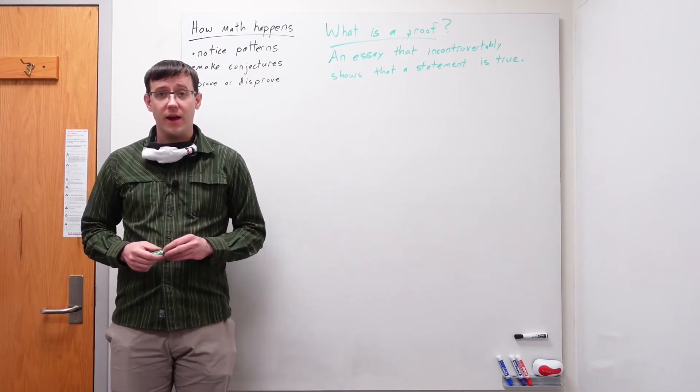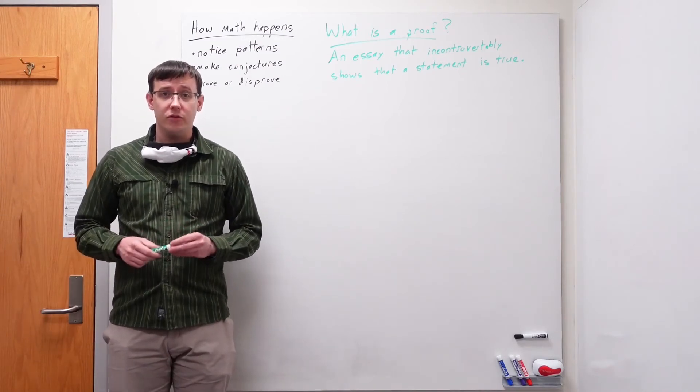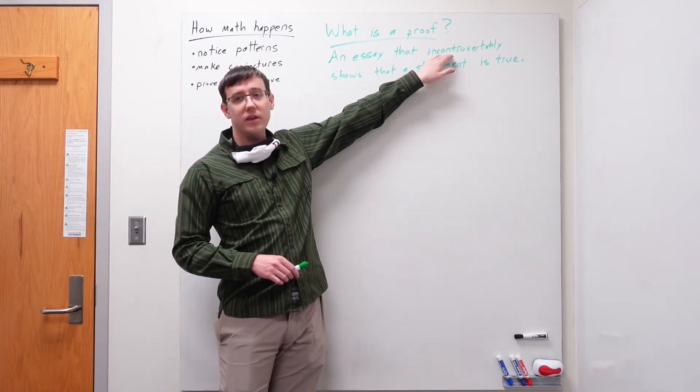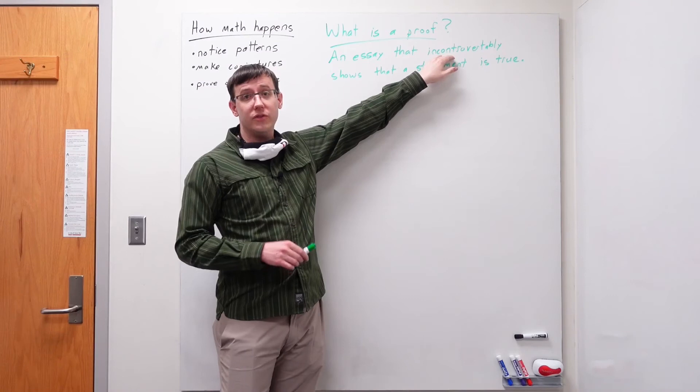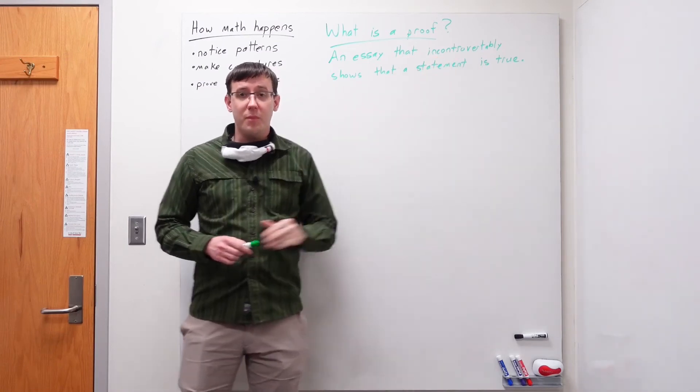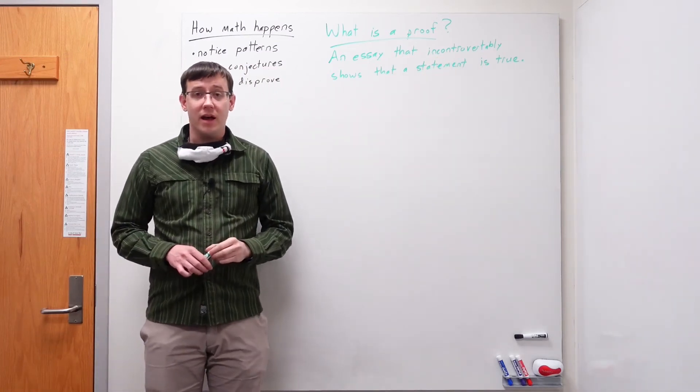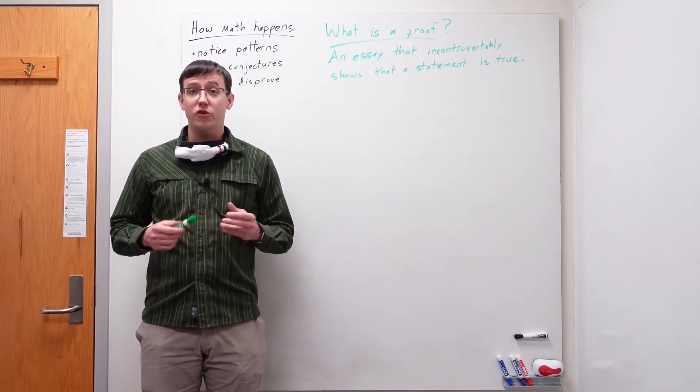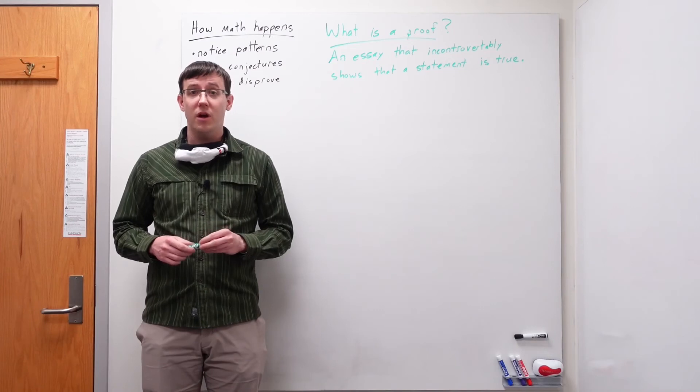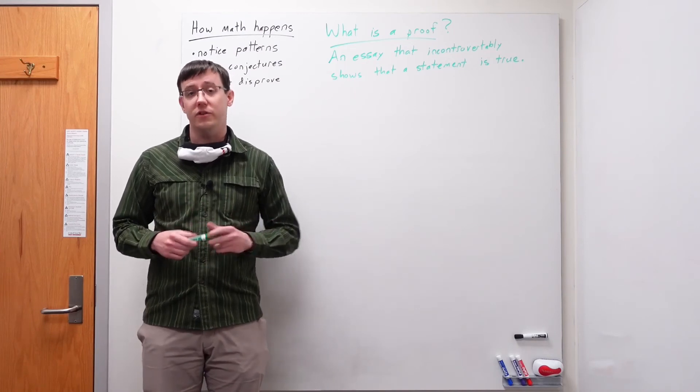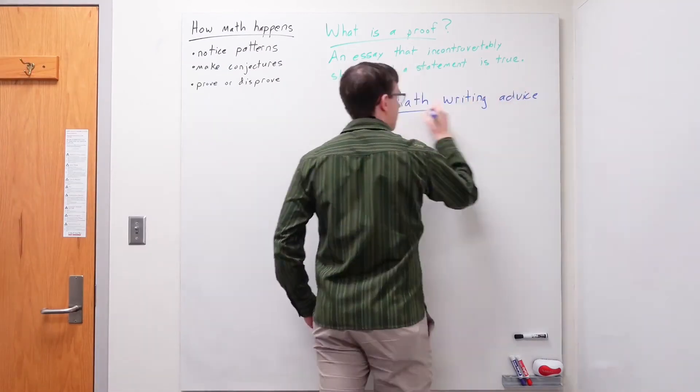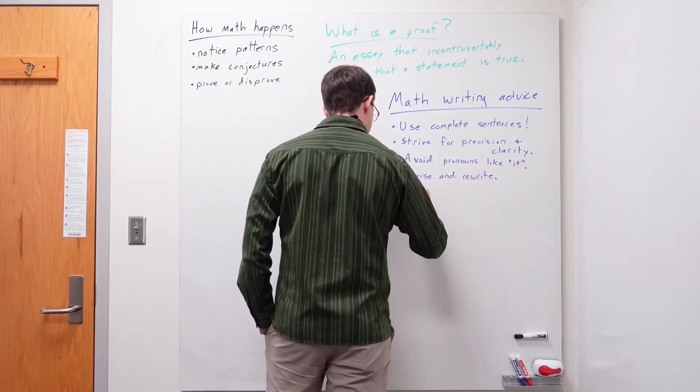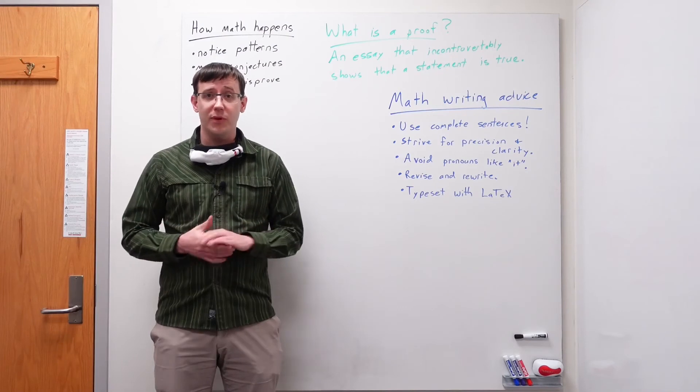But unlike many other essays, proofs have some very strong constraints on their structure. And that's expressed here by the idea that a proof is incontrovertible. Many essays you might write have a possible counterargument. But if you have completed a rigorous proof, there should be no room for someone who accepts the starting assumptions to disagree.